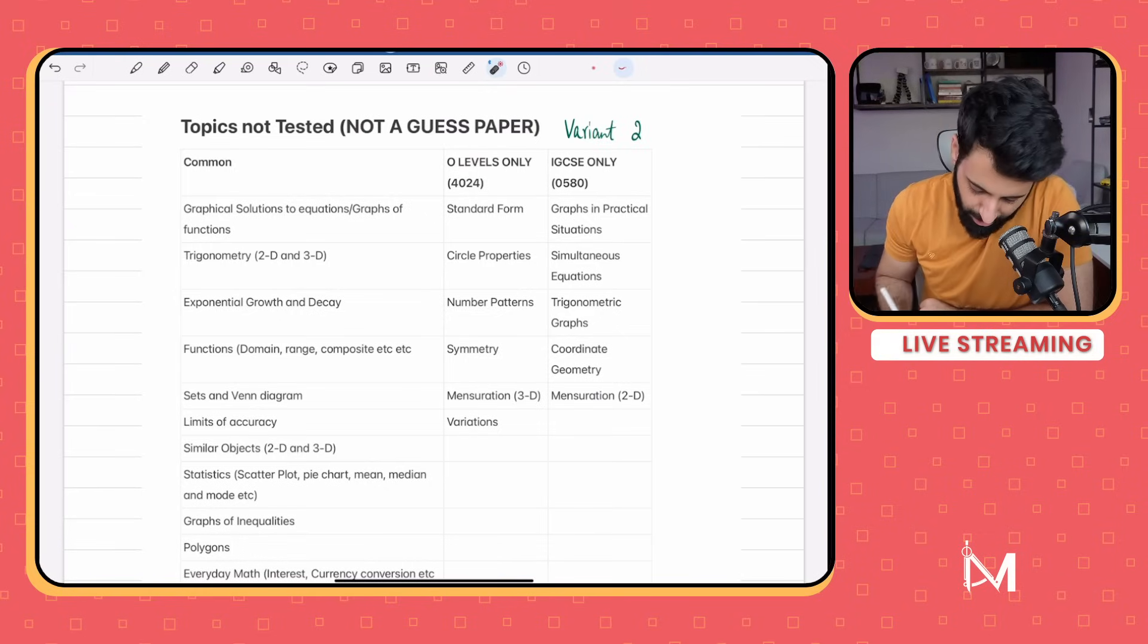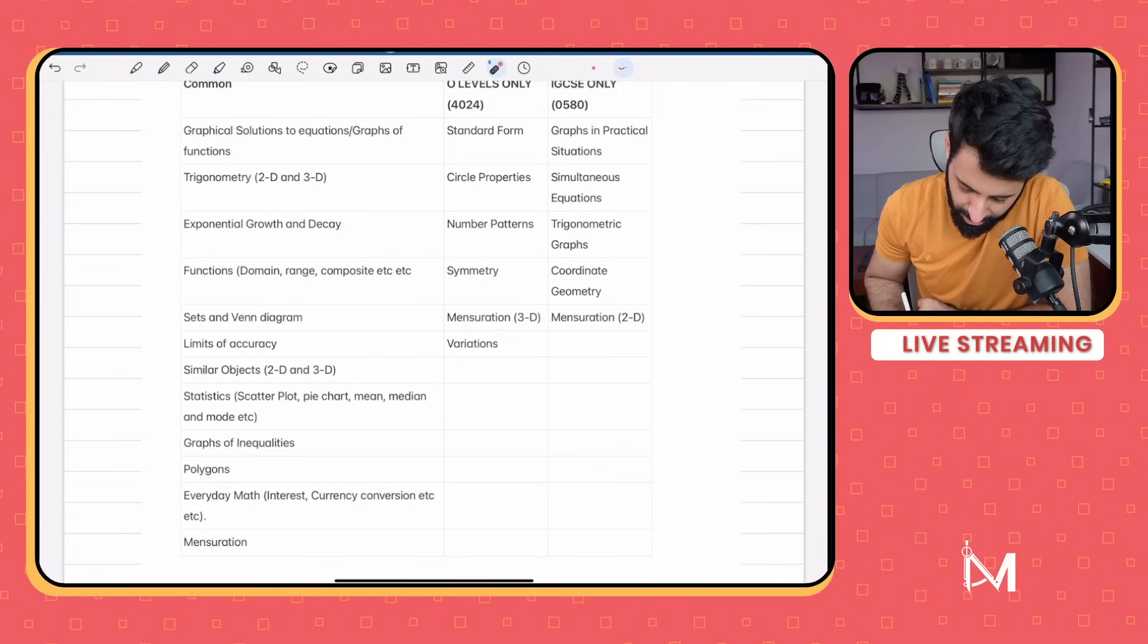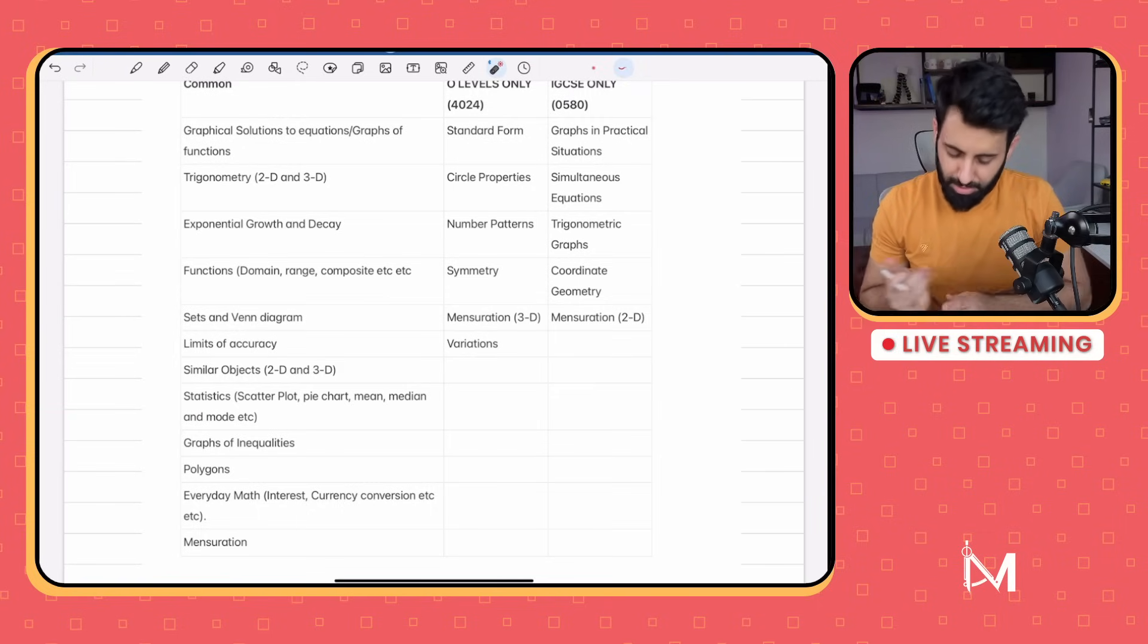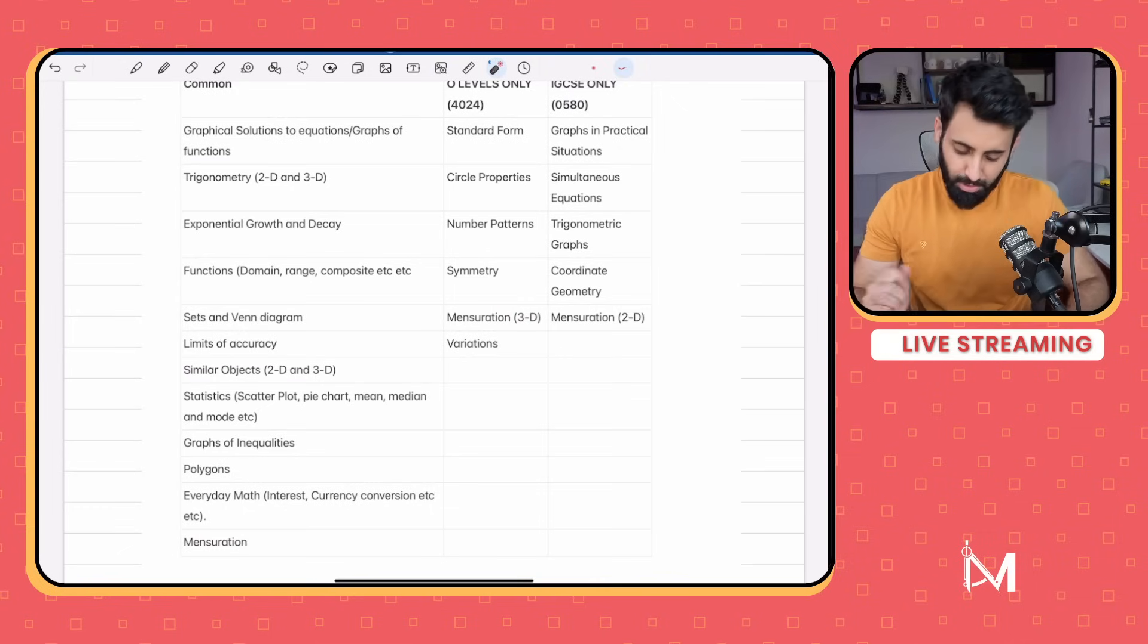Then graphs of inequality is not tested in O-levels or IGCSE - this is where you find the equation and you either shade the region or you define the shaded region. Polygons, once again could be tested in O-levels or IGCSE. Now everyday math - I do understand that there was a certain question of everyday math where you maybe had to find out the percentage change or maybe had to find out the price before change or after change, stuff like that. But once again, so extensive. There could be a question on interest, there could be a question on currency conversion, which you can expect in the coming paper. Mensuration - I've realized that I've written mensuration here and here also, so mensuration is something that has been tested in both the papers but also hasn't, so we'll talk about that.